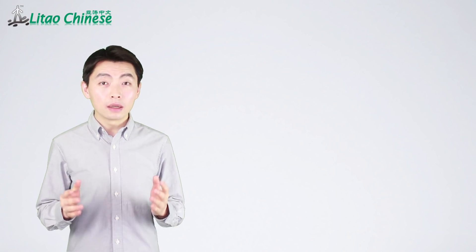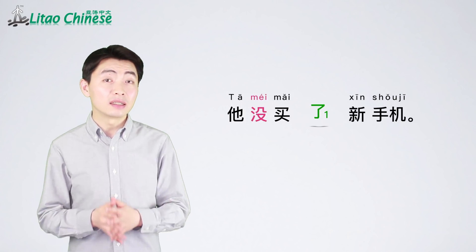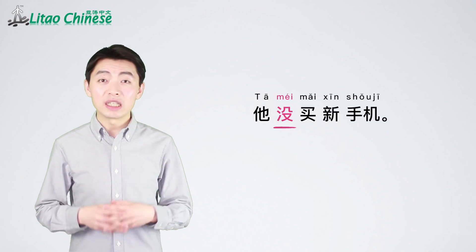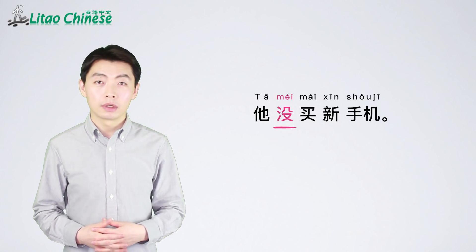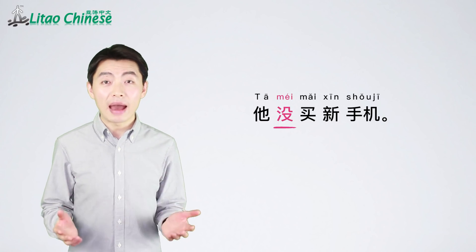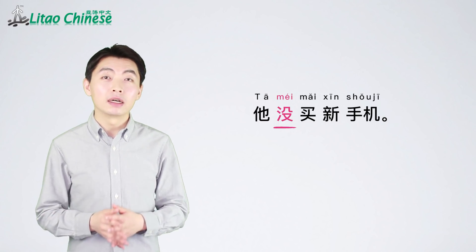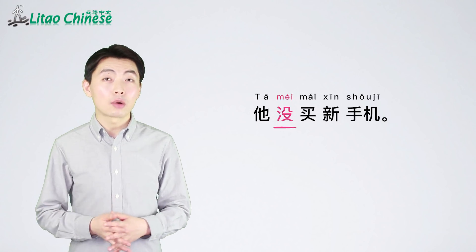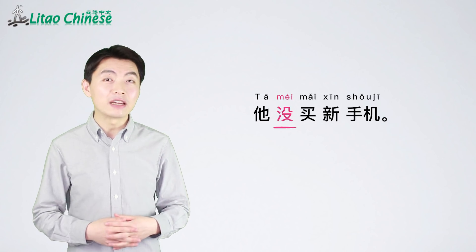Another difference between them is that 了₁ normally doesn't appear in a negative sentence, because we use 没 to negate past actions. For example: 她没买新手机 — she didn't buy the new mobile phone. It would be incorrect to put 了 after the verb 买 here.